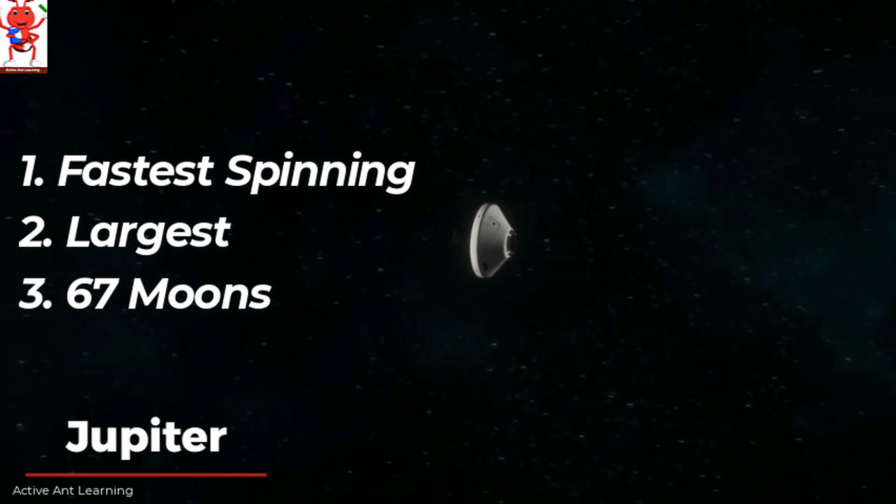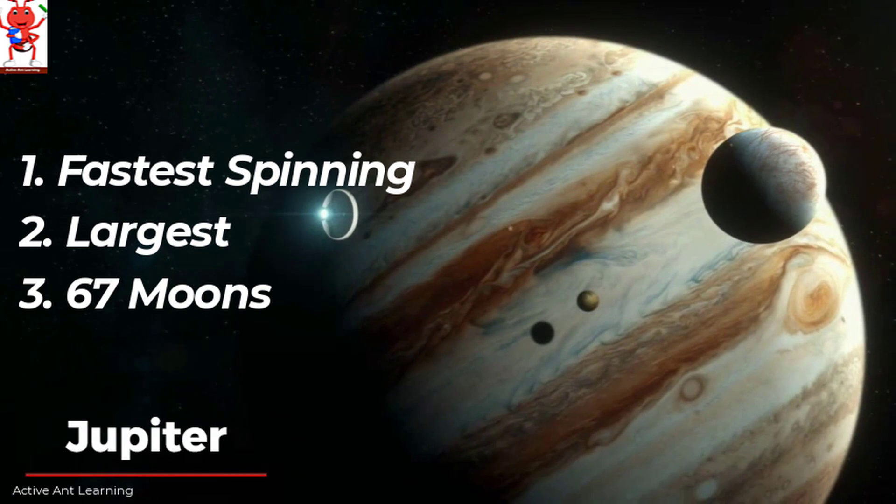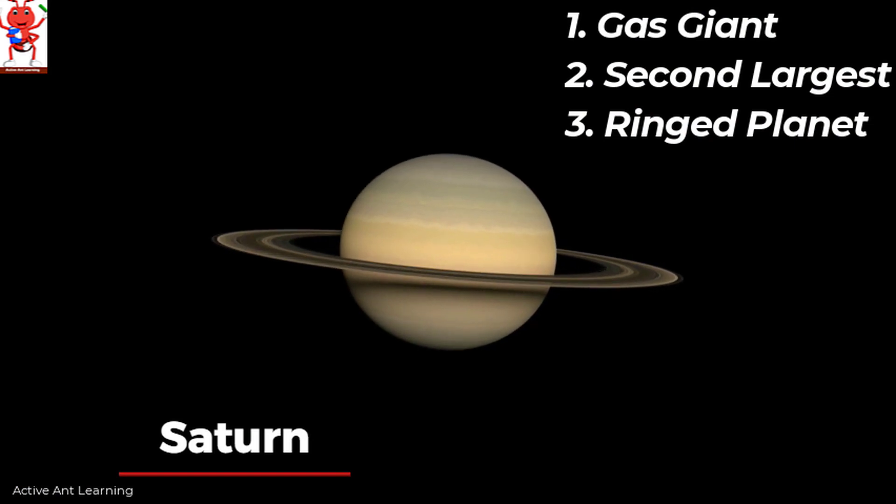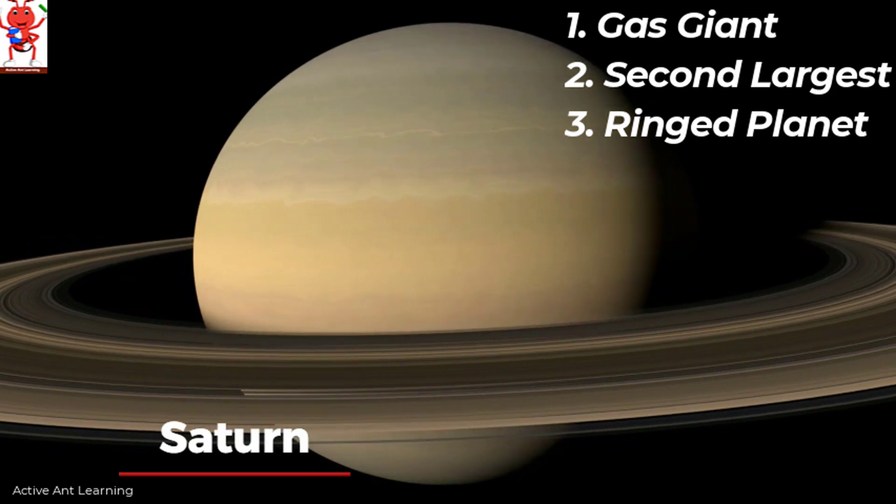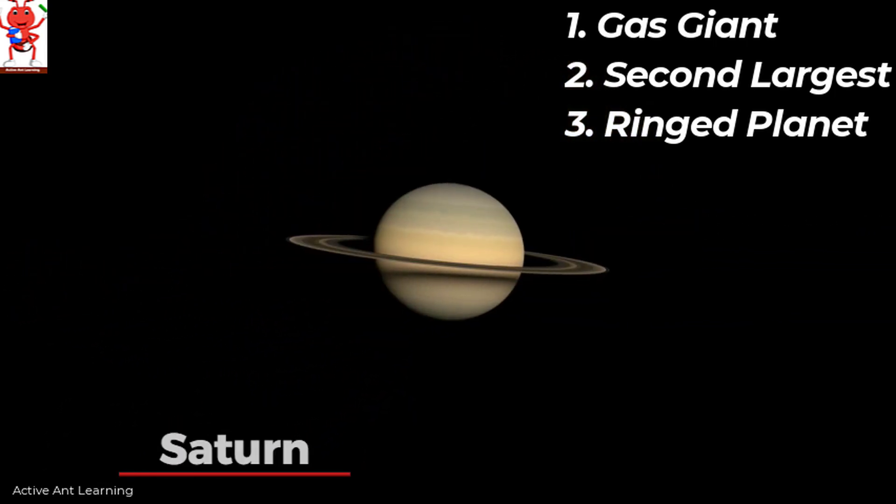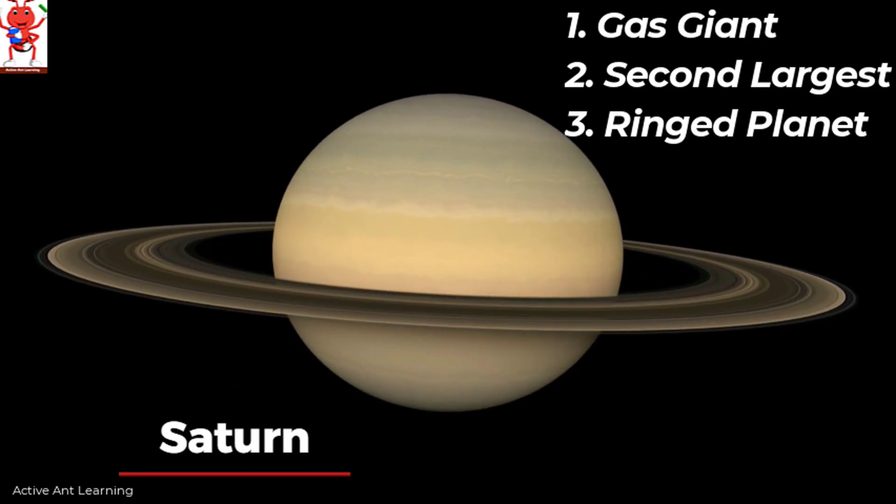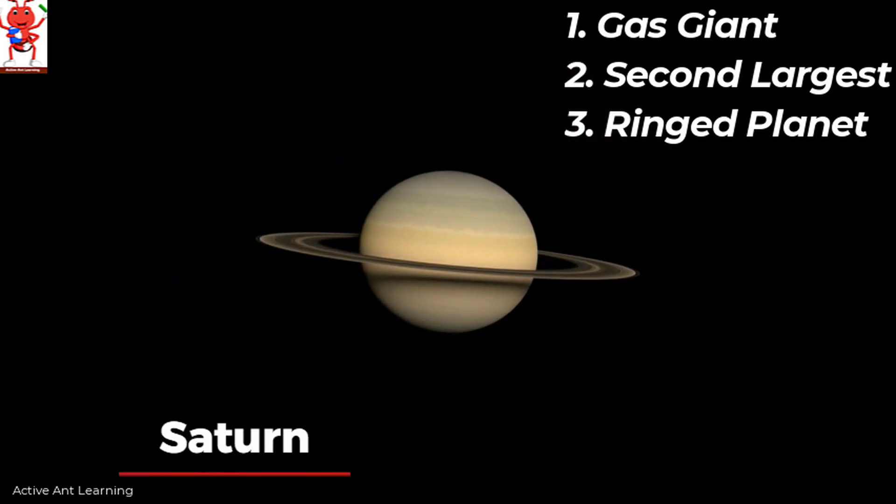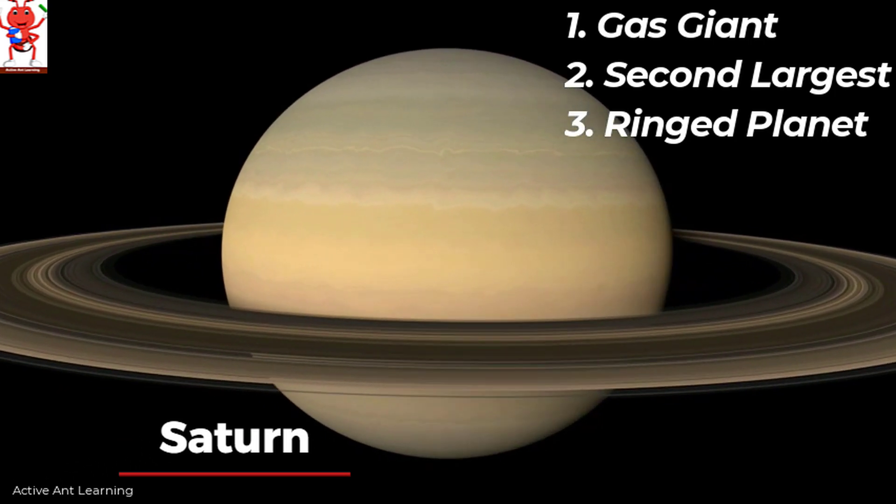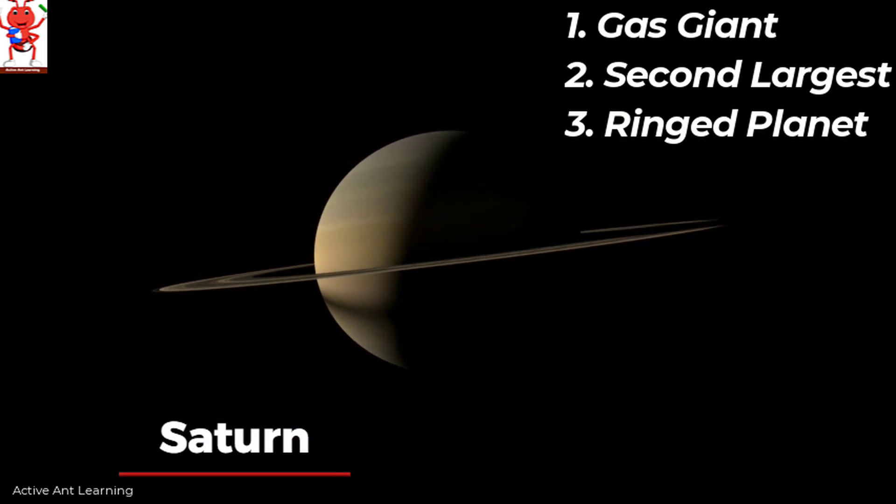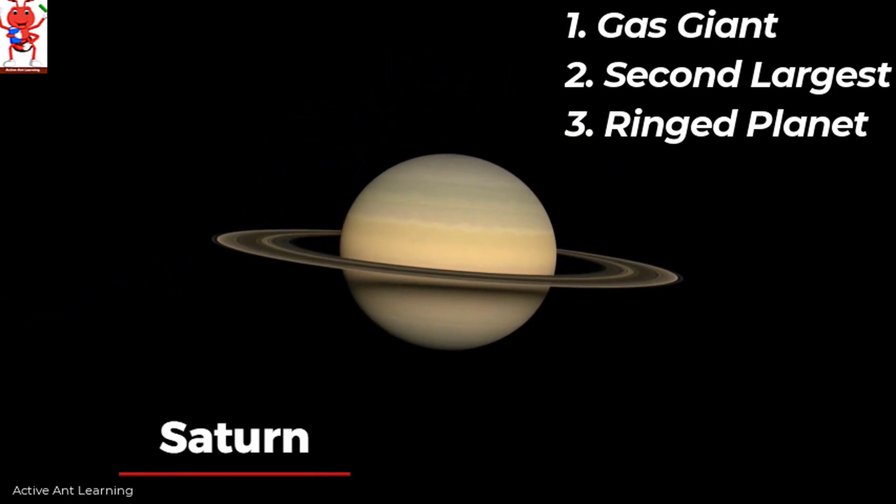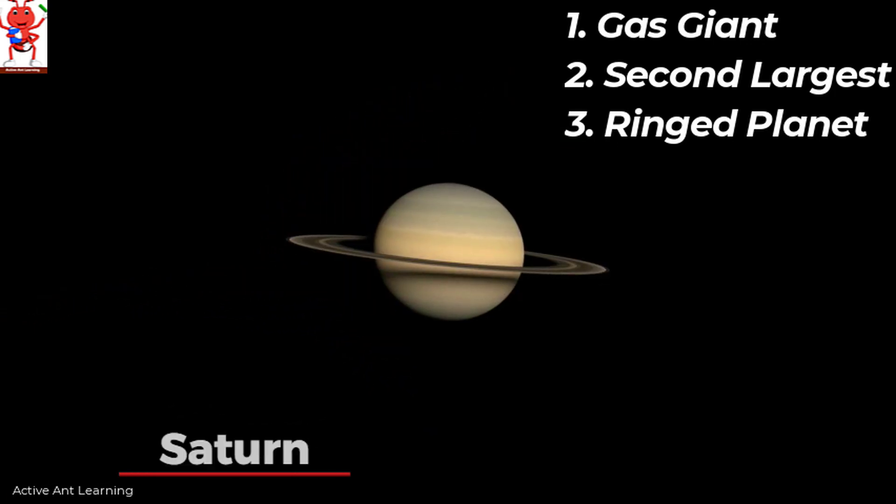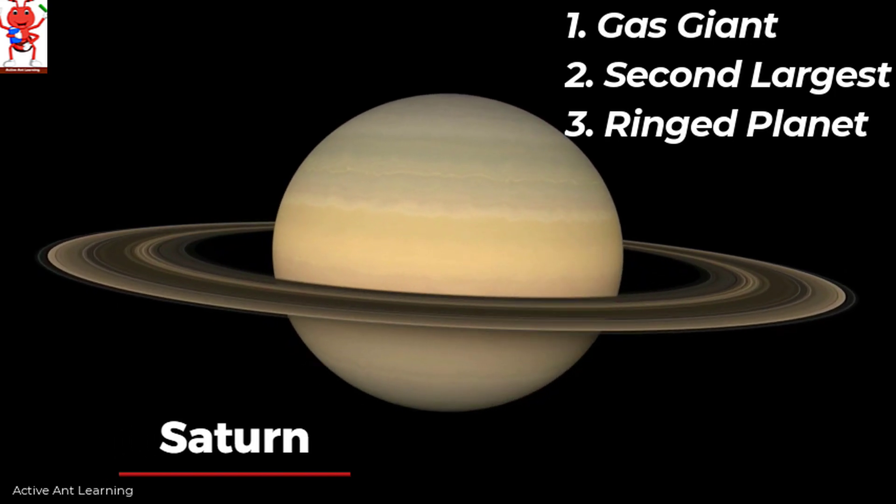Saturn is the sixth planet from the sun and the second largest after Jupiter. Anvi which planet is called as ringed planet? Yes I know. Saturn's rings are more visible than Jupiter, Uranus and Neptune. That's why Saturn's nickname is the ringed planet. Also friends did you know Saturn is a gas giant planet and has no solid surface. That's why if there was a bathtub big enough to hold it Saturn will float.